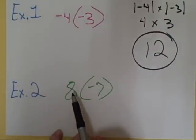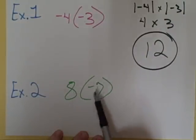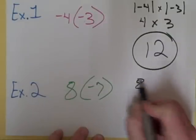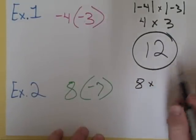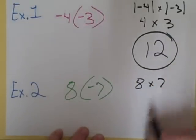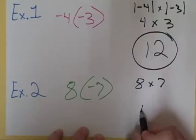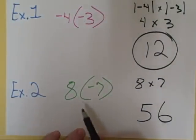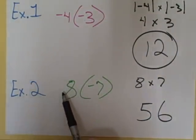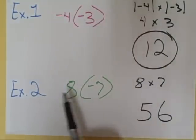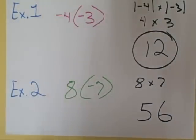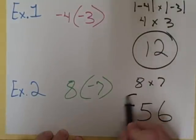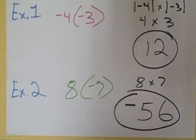Now on this one, we have an eight times a negative seven. The absolute value of eight is eight, and the absolute value of negative seven is seven, and eight times seven is 56. But you look back and you realize that the eight is positive and the seven is negative, so the signs are different, and your answer is negative — negative 56.